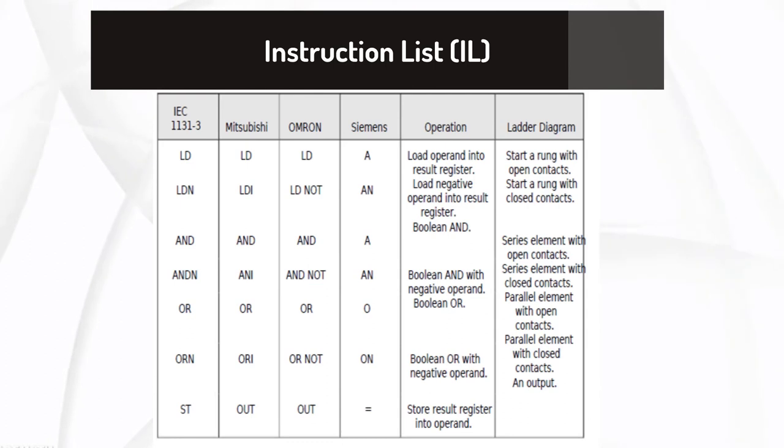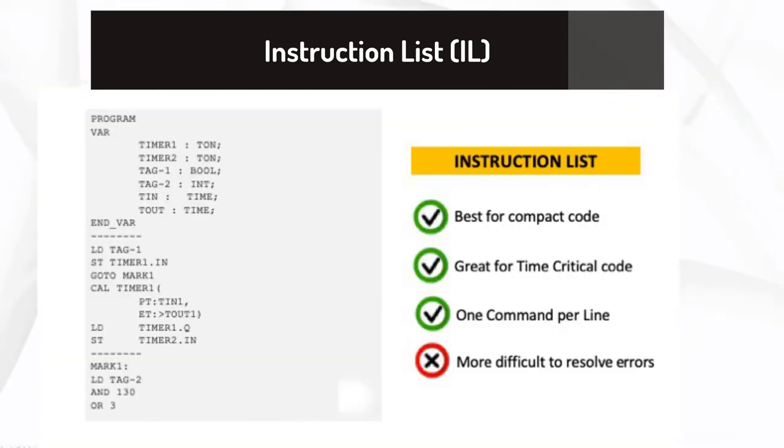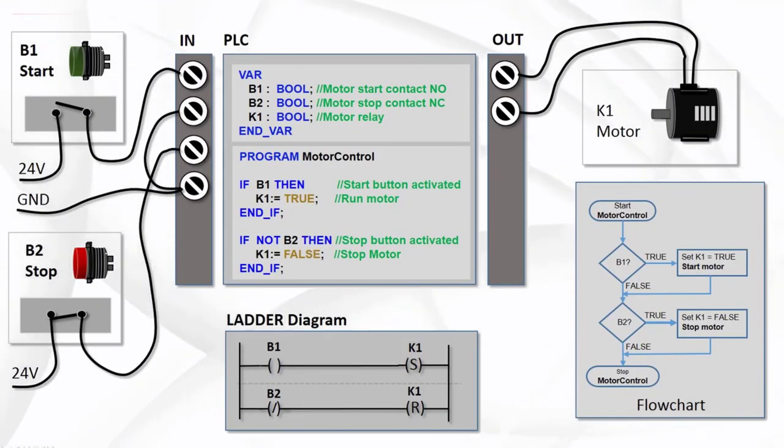One of the clearest benefits is program execution speed. As with assembly language in general, instruction lists are a low-overhead language and execute faster than graphical languages. Another plus is that ILs also tend to take up less memory. This is a clear benefit, especially in a PLC that is tight on memory space. I hope you have understood the difference between all five languages that are being used to program a PLC.